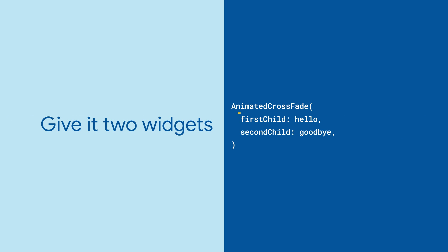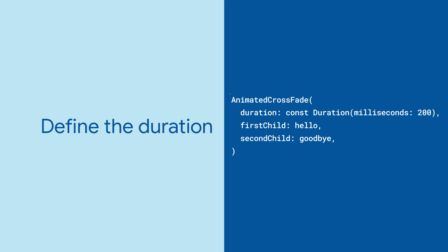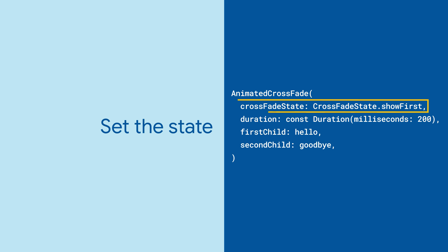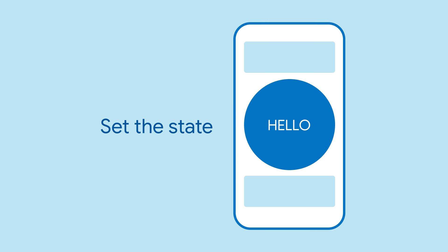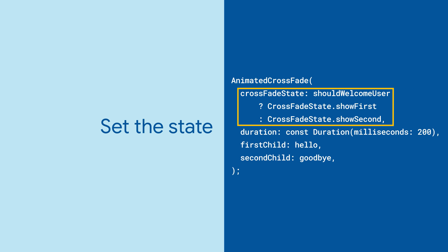Provide the Crossfade widget with two children: first child and second child. Tell the Animated Crossfade how long it should take to animate. Lastly, set what widget to show. Here we are only ever showing the first widget, which is not very useful. You will want to change the state according to the state of your app.